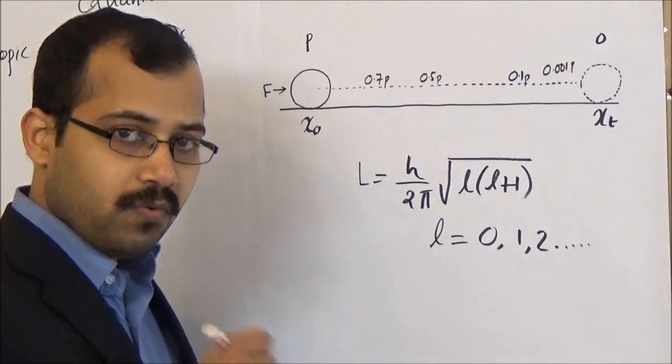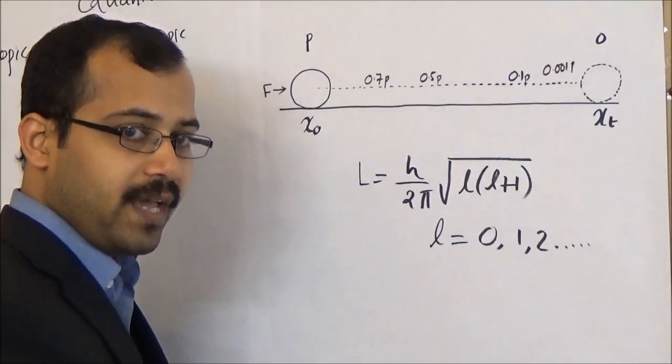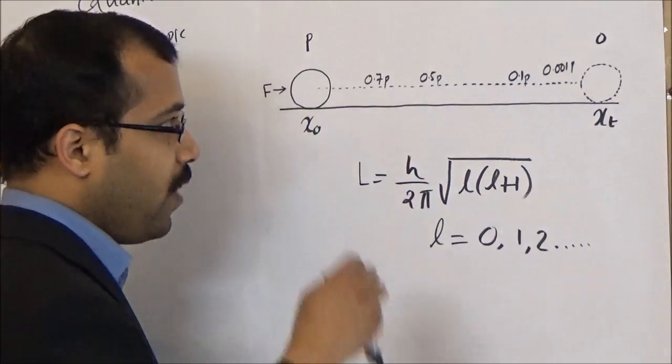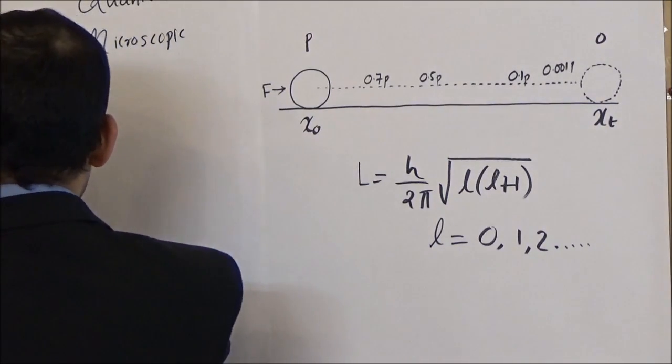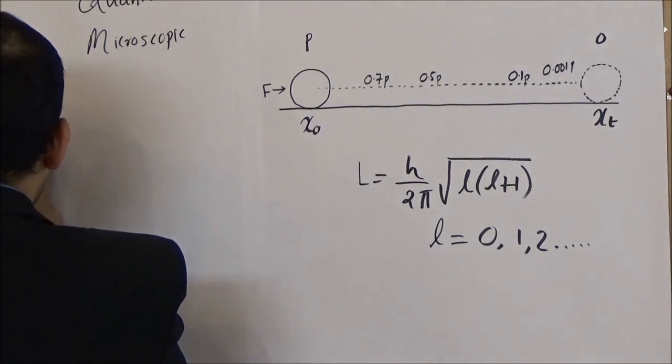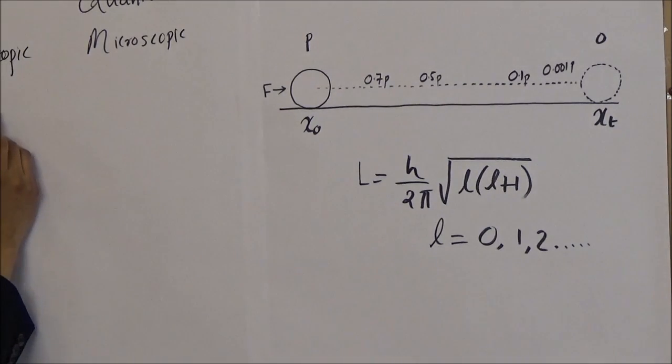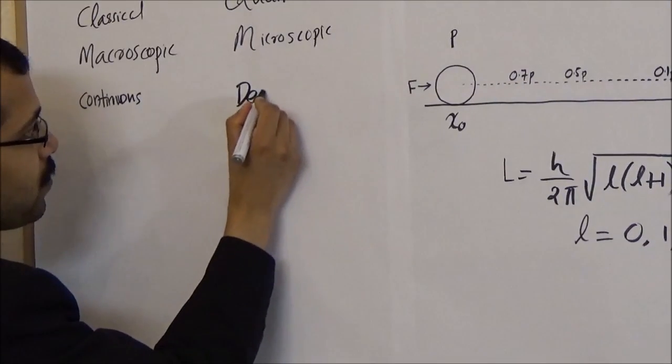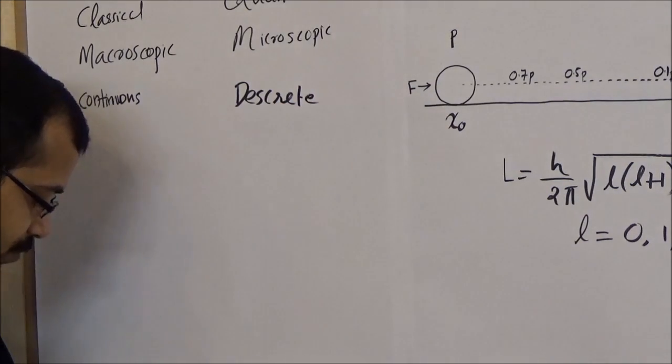So we have seen two examples of how classical mechanics and quantum mechanics is applied to the systems. While classical mechanics allows continuous range of values for the dynamic variables, quantum mechanics allows discrete values.